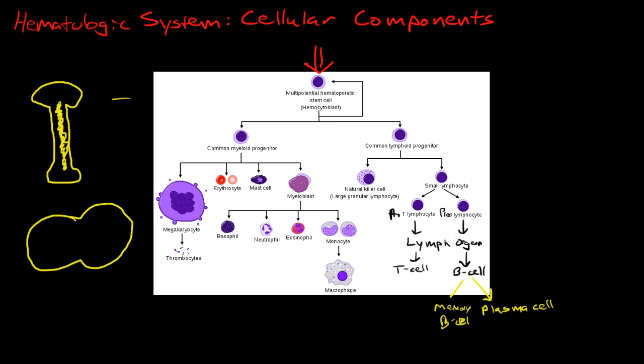and in our scapula, and our sternum, and our skull, and actually a little bit in our ribs too. So these are the flat bones in our body.